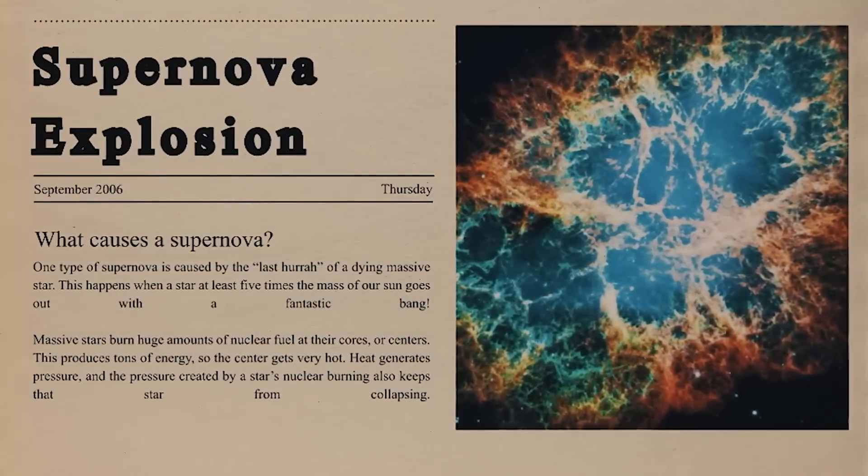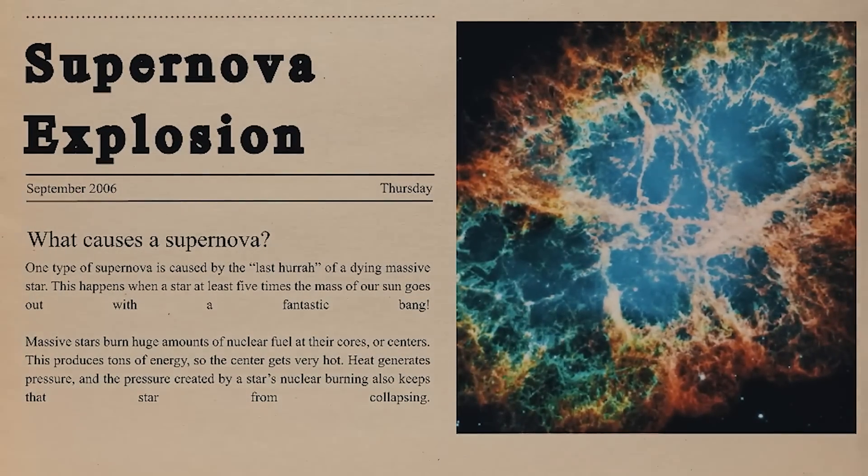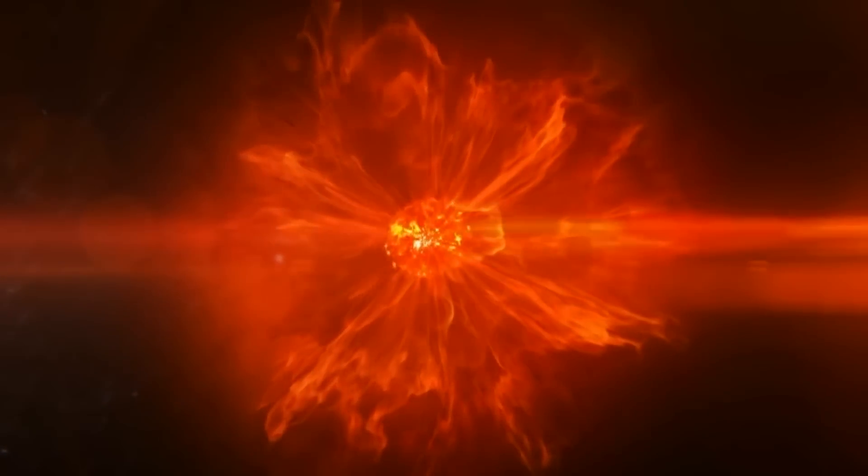A star must be extremely massive, at least eight times the size of the Sun, in order to go supernova. Yet a star must be between 30 and 40 times as massive as the Sun for a supernova to create the strongest sort of gamma ray burst.